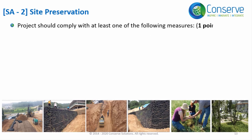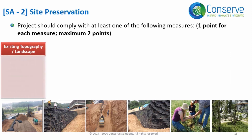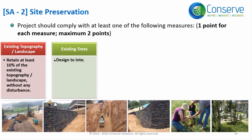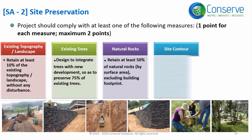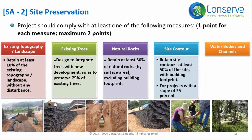Projects should comply with at least one of the following measures to earn points. Existing topography or landscape: retain at least 10% without any disturbance. Existing trees: preserve 75% of existing trees by integrating them with new development. Natural rocks: retain at least 50% of natural rocks excluding building footprint. Site contour: retain at least 50% of the site contour for projects with a slope of 25%. Water bodies and channels: retain 100% of water bodies and channels existing on the site.